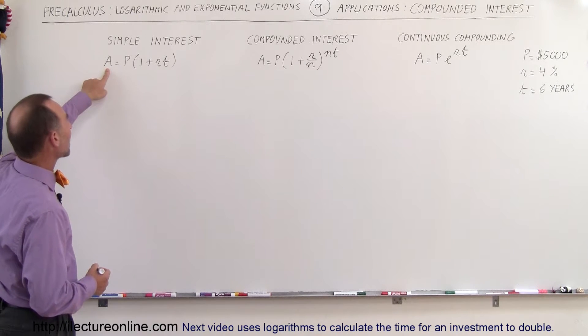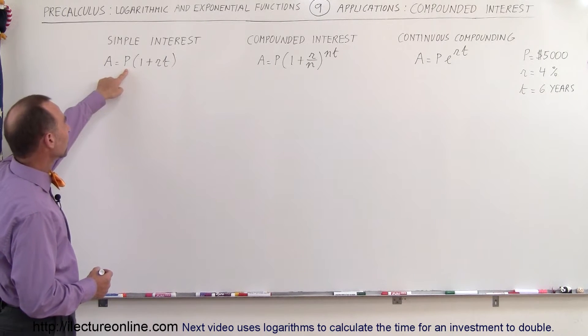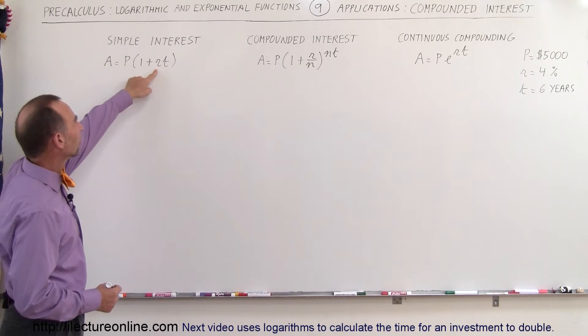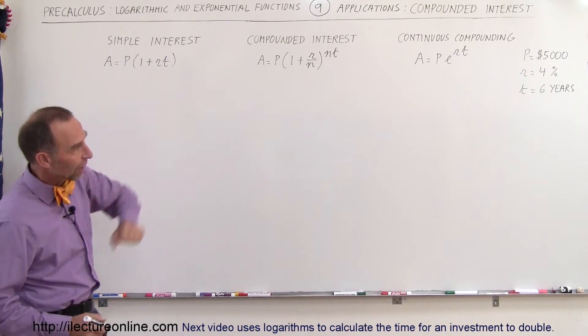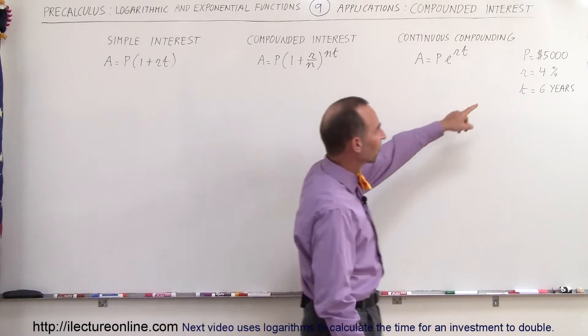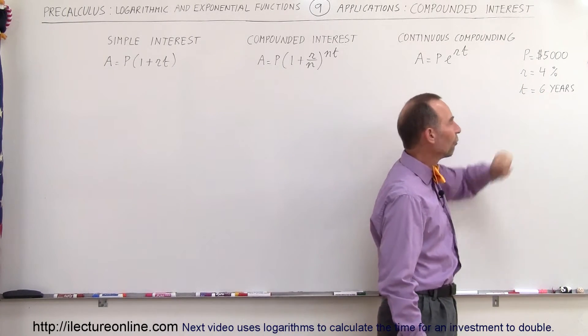So here we have A standing for the amount that you end up with, P the initial principle that's being invested, R is the interest rate, and T is the time typically in years. And our example is going to include an investment of $5,000 at 4% interest for 6 years.